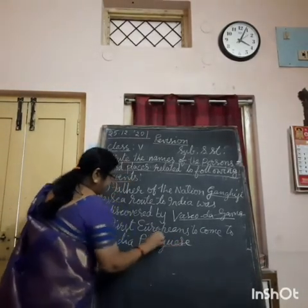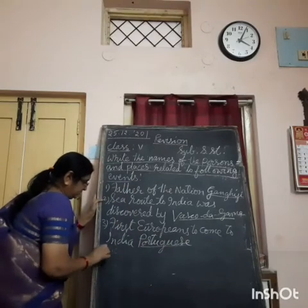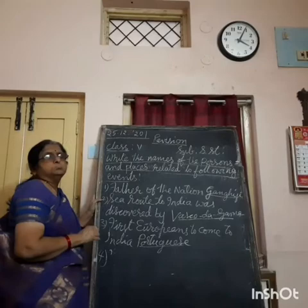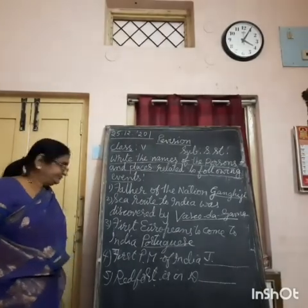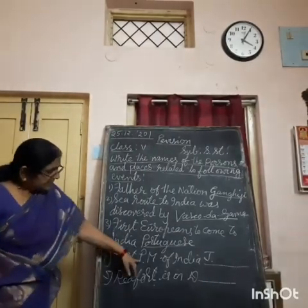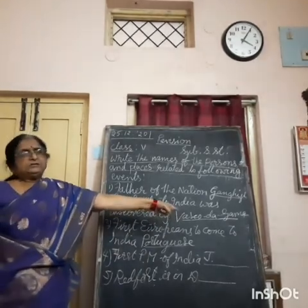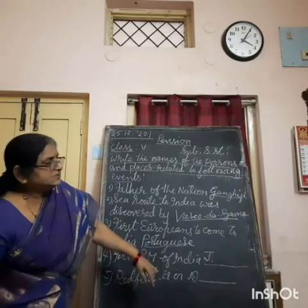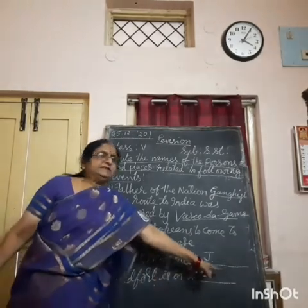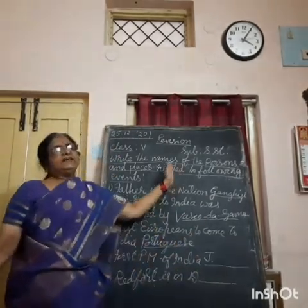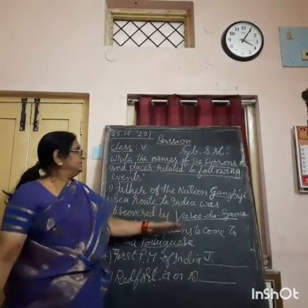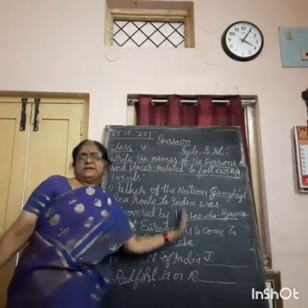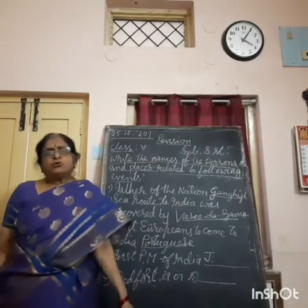Like this, you have: first Prime Minister of India — J is the clue — means you write Jawaharlal Nehru. Red Fort is in — D is the clue — means Delhi. In this way, you have to write all the answers with the help of the first letter. First letter of the answer will be your clue.